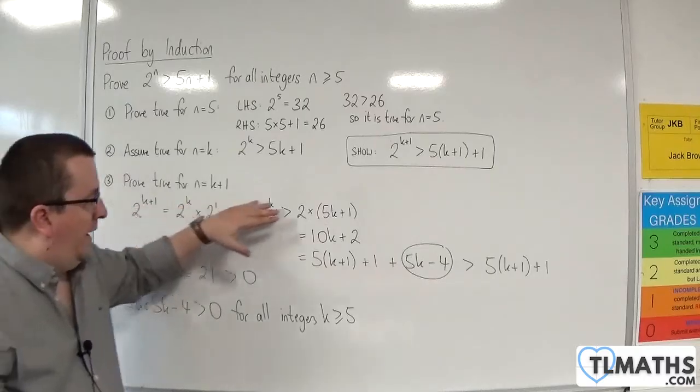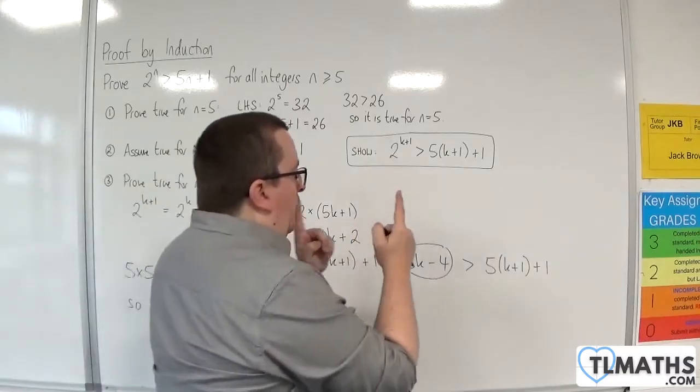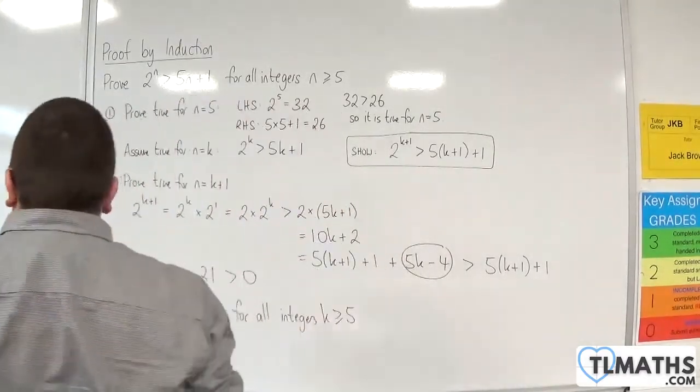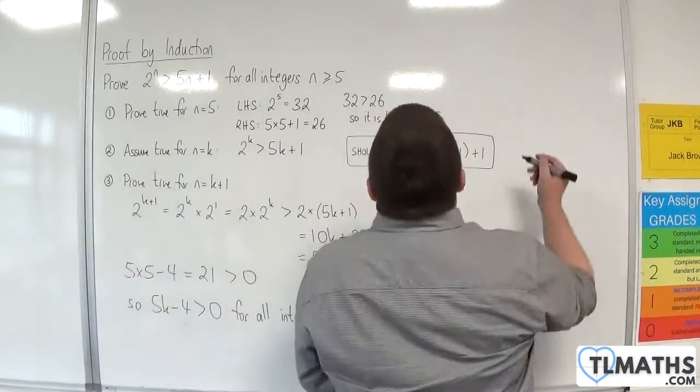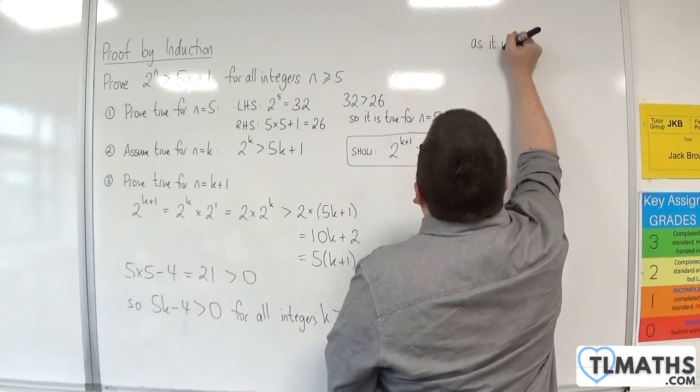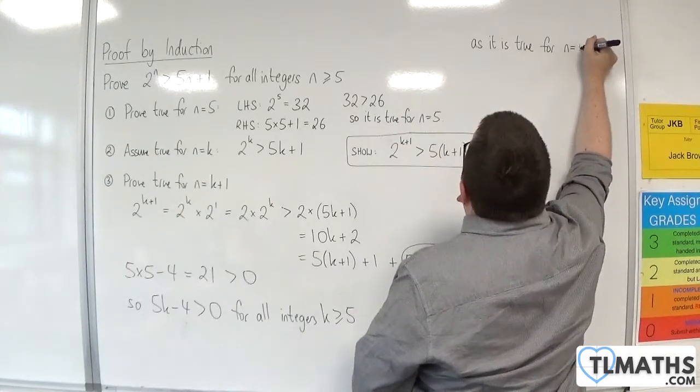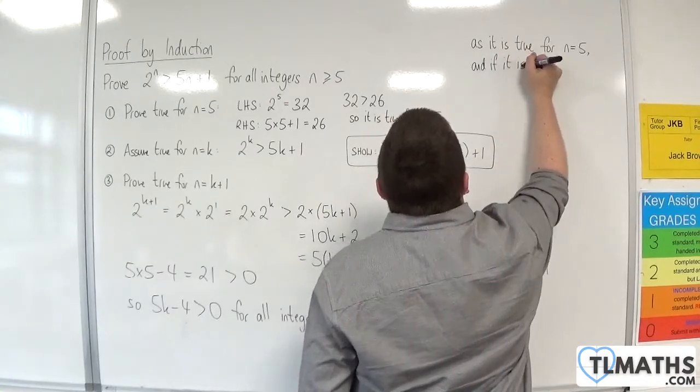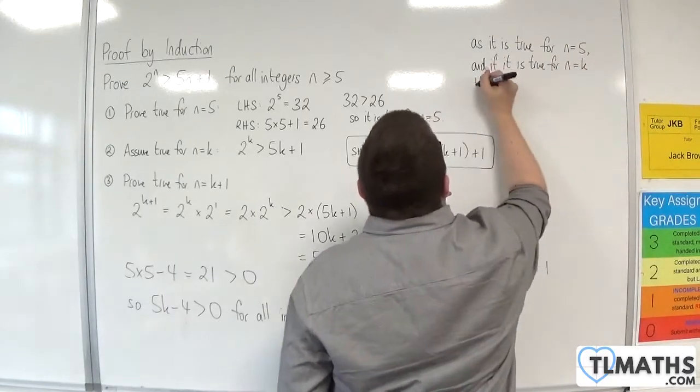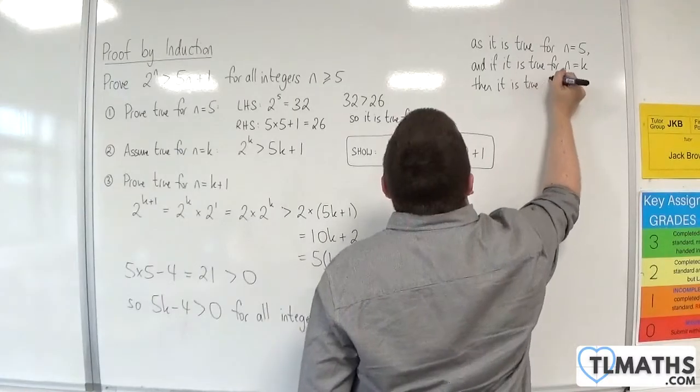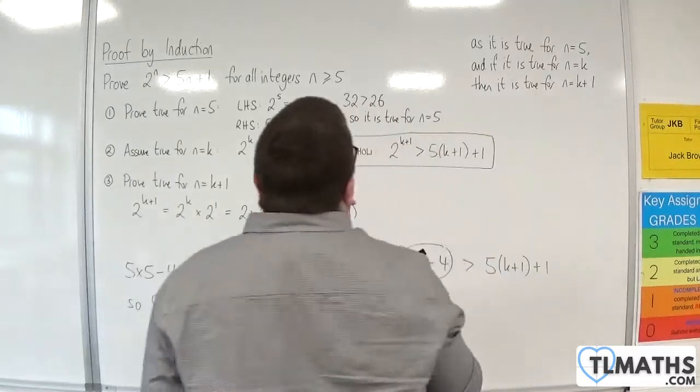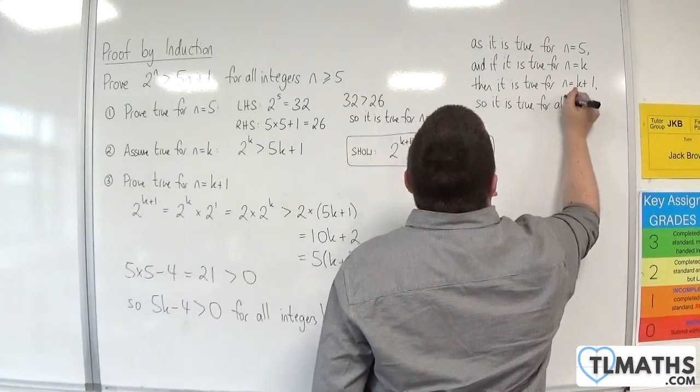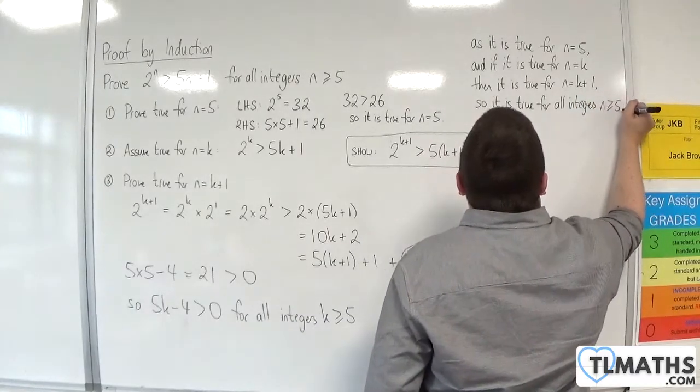And so, this process shows you that 2 to the k plus 1 has got to be greater than 5 lots of k plus 1 plus 1, which is what I wanted to show. So, of course, I need to write down my concluding statement. So, I'll do it up here. So, as it is true for n equals 5, because that is my base case, and if it is true for n equals k, then it is true for n equals k plus 1. So, it is true for all integers n greater than or equal to 5.